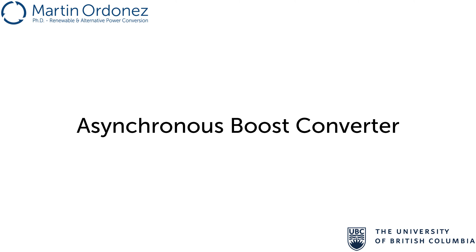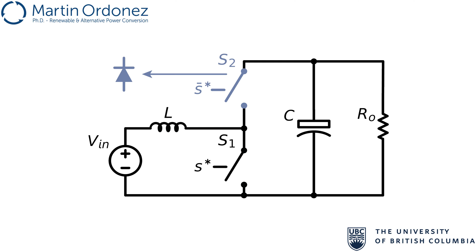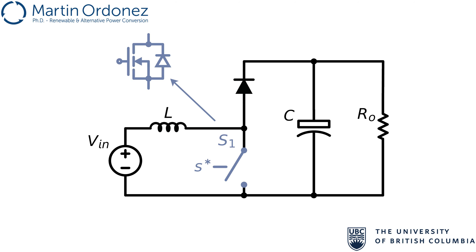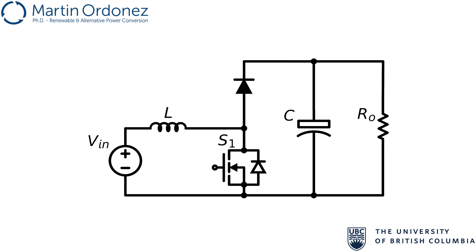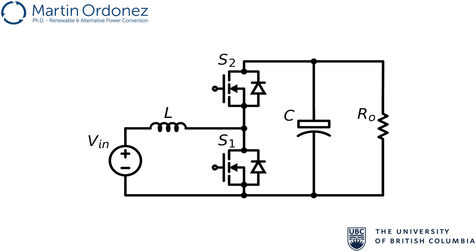In an asynchronous boost converter, the upper switch is implemented using a diode, which will automatically turn on when the lower switch, implemented with a controllable switch such as a MOSFET or IGBT, is turned off. In the synchronous boost, the high side diode is replaced by another controllable switch driven by a complementary input. This variation provides additional regulation features when compared with the traditional asynchronous boost.